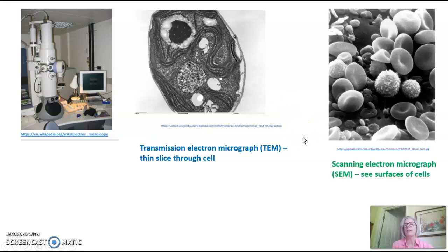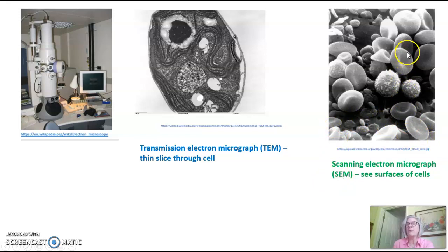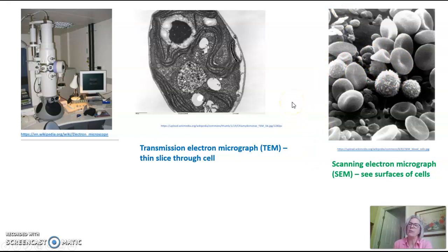There's a second type called a scanning electron microscope, or SEM, and that shows you the surface of cells. These here happen to be red blood cells — identifiable by their concave shape — and we've got small platelets and some other immune cells here as well. It gives you amazing pictures of the outside surfaces of cells, but again, these cells are dead because they've had to be encased in plastic.